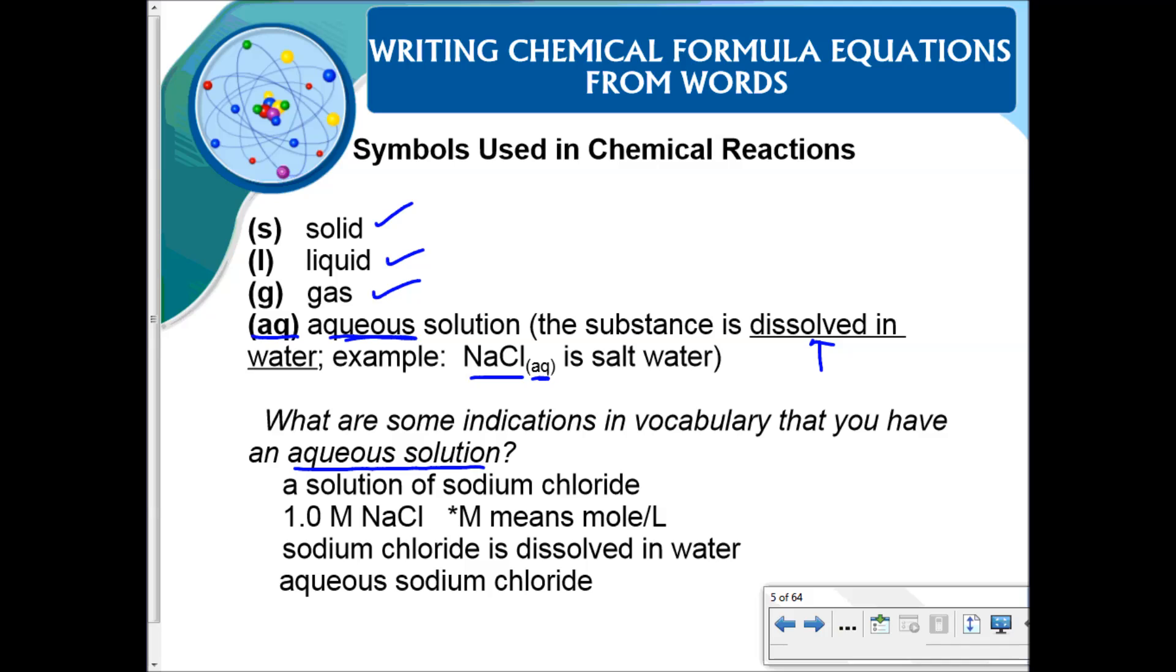What are some indications or words that you might see that could indicate that you have an aqueous solution? We could say you have a solution of sodium chloride. We could also give you the concentration of the solution that we have, and so that big M there means molarity and what that molarity stands for is moles per liter. If you ever saw a number with the big M, it does indicate that that NaCl is in solution. We could say sodium chloride is dissolved, that would mean it's aqueous, or we could say aqueous sodium chloride.